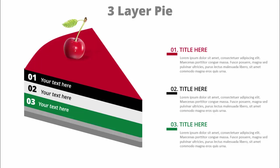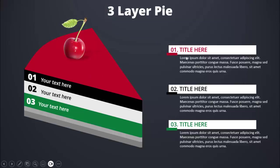In today's tutorial I'm going to show you how to create this three-layer pie design in PowerPoint. I have created this pie with three layers and added the cherry on top. You can add Option 1, 2, and 3 text, and if you want to add more options you can, then add the details towards the right with the title for each option. I've also created one more slide with a dark background — depending on the requirement you can choose the slide.